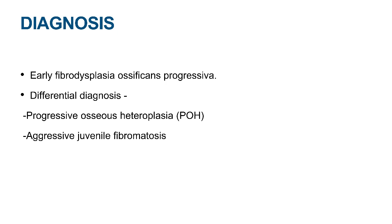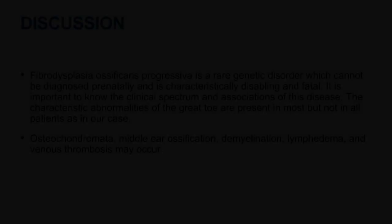A final diagnosis of early Fibrodysplasia Ossificans Progressiva was made. The disease needs to be differentiated from various disorders, especially in the juvenile population. One differential is Progressive Osseous Heteroplasia, which can be differentiated on genetic grounds, and aggressive juvenile fibromatosis, which lacks the characteristic calcifications.